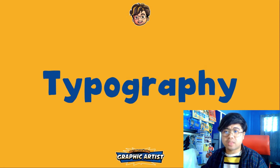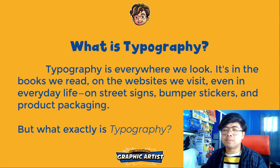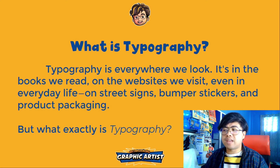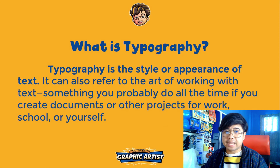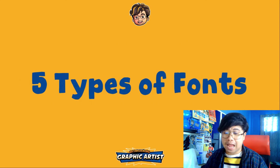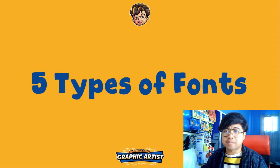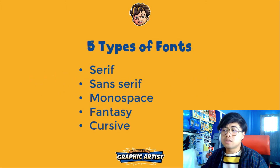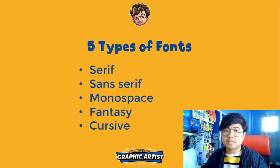Now we will proceed with typography. Typography is everywhere we look — in books, on websites, in everyday life on street signs, bumper stickers, and product packaging. Typography is the style or appearance of text; it can also refer to the art of working with text, something you probably do all the time without realizing it. To know more about text, let's look at the five types of fonts: serif, sans serif, monospace, fantasy, and cursive.